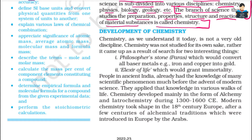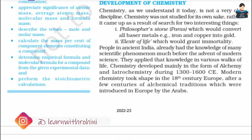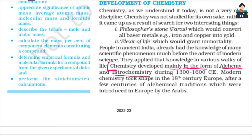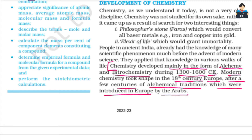Chemistry developed mainly in the form of alchemy and lateral chemistry during 1300–1600 CE. Modern chemistry is developed in the form of alchemy in Europe, after a few centuries of alchemical traditions which were introduced in Europe by the Arabs.